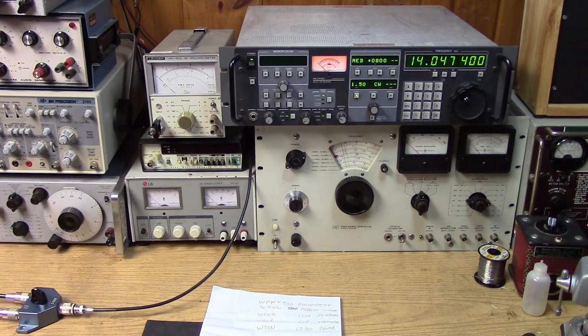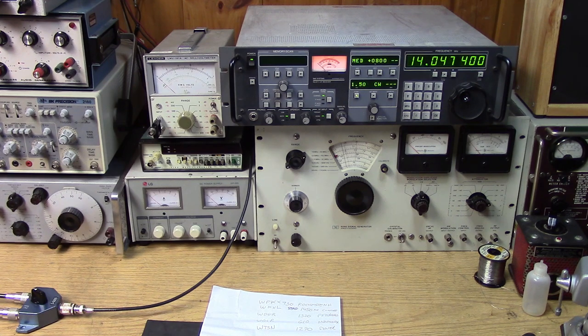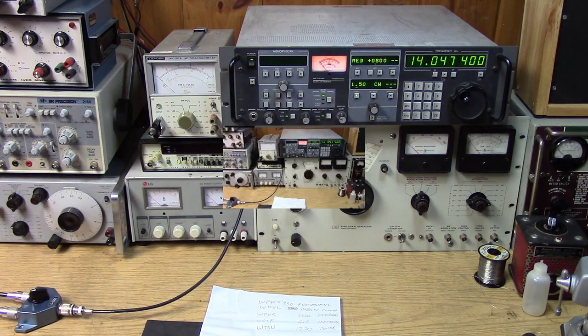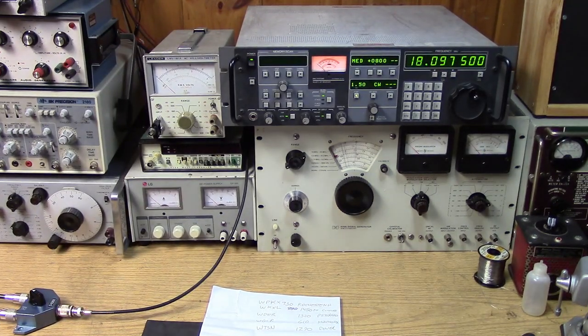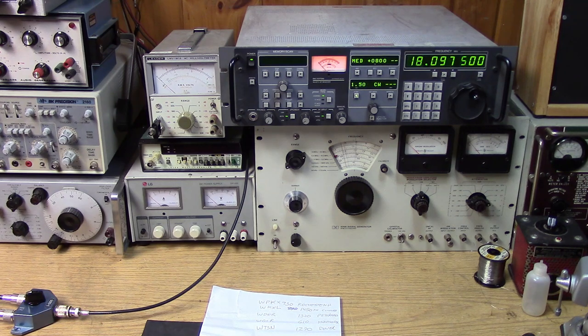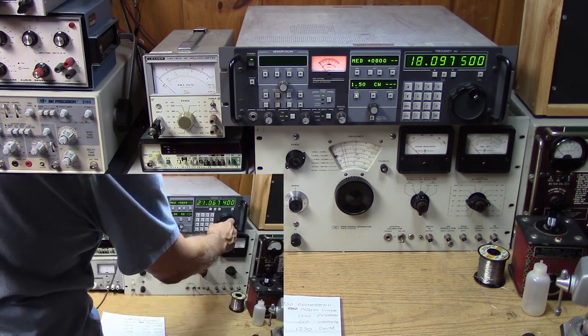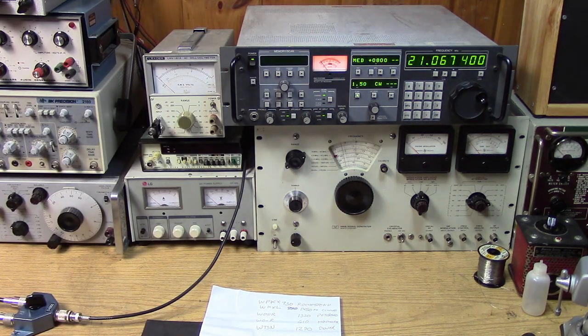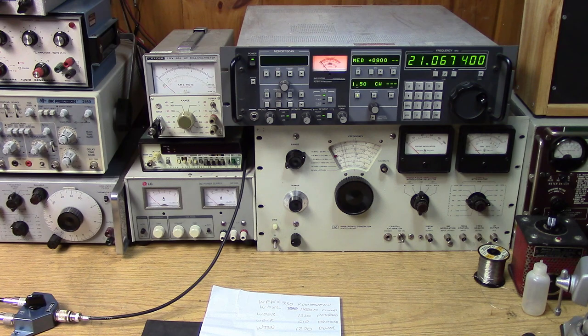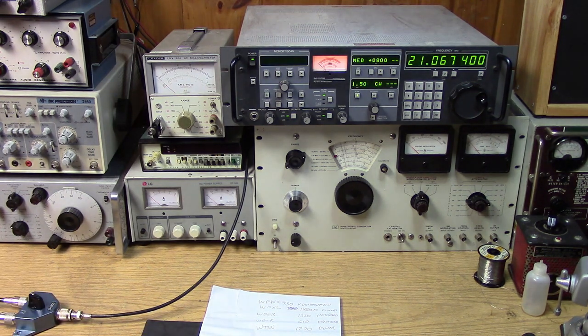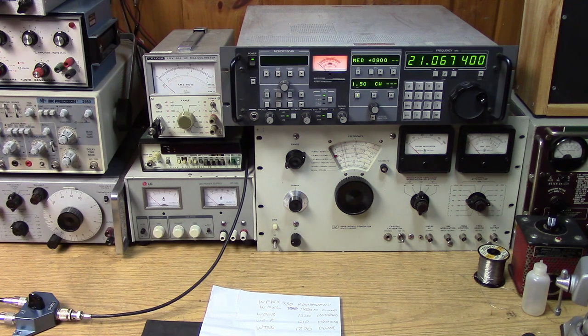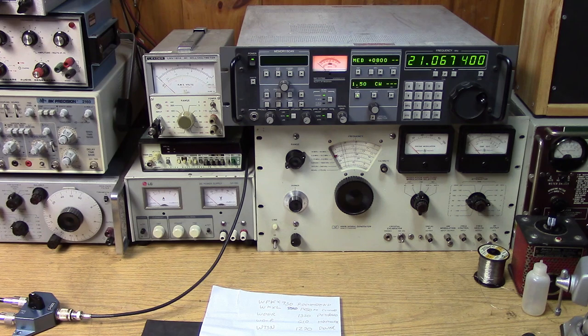Okay here's the loop on 20 meters. Short skip coming in on the loop. And now the dipole. W1AW on 17 meters. Coming in on the loop. And now on the dipole. Well maybe we did get it. Hold on. Here's the loop. 15 meters. I think we found W1AW even on 15 meters. What a signal. And on the dipole.